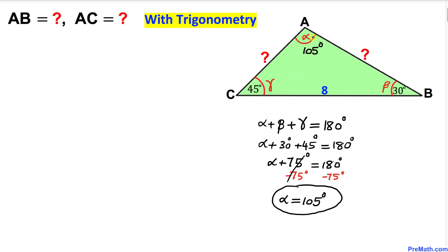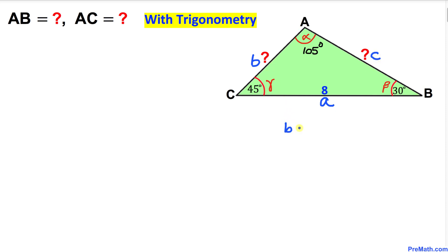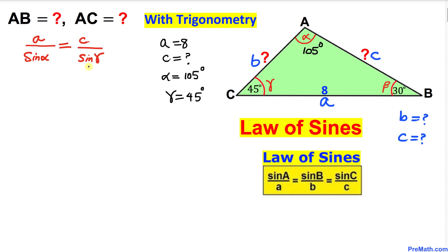Now let's label the sides. The opposite side to vertex A is lowercase a, the opposite side to vertex B is side AC which I'll call lowercase b, and side AB I'll call lowercase c. We will find the values of b and c using the Law of Sines: a over sine alpha equals c over sine gamma.